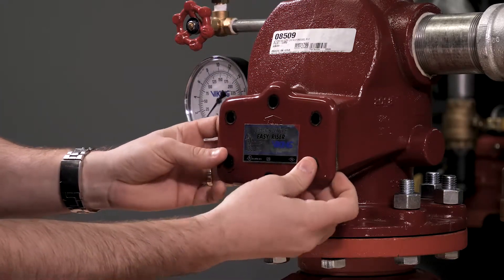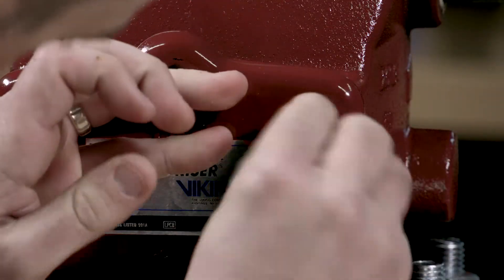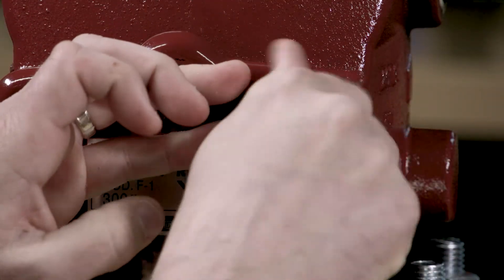Line up the cover gasket and the cover with the holes in the body of the valve. Once the holes are lined up we can now replace the cover screws.